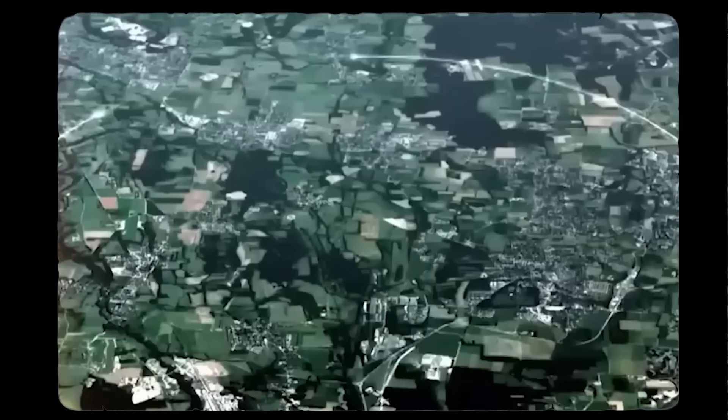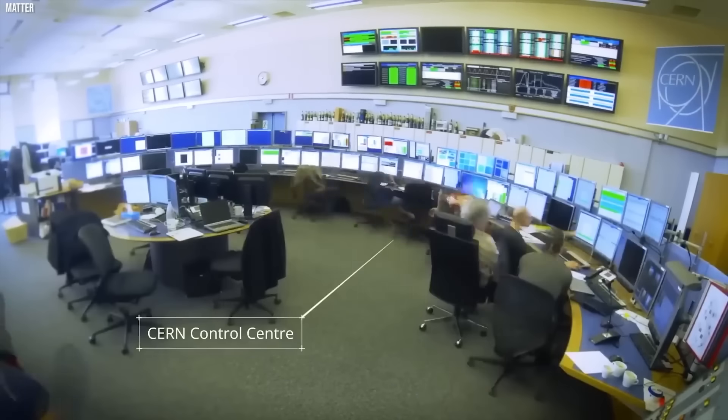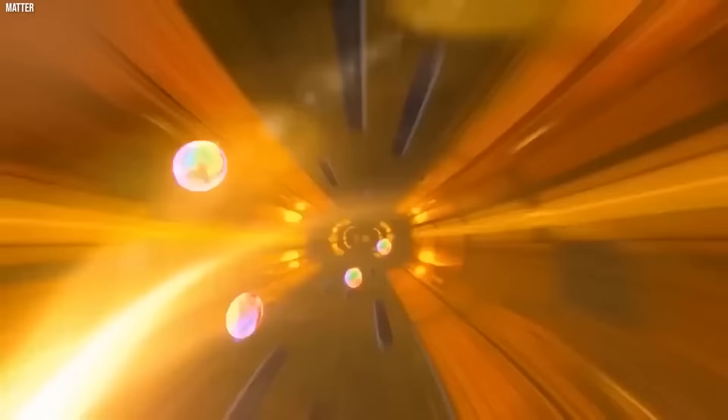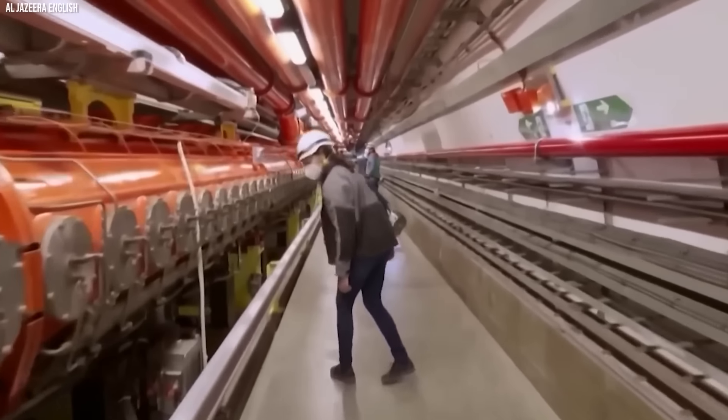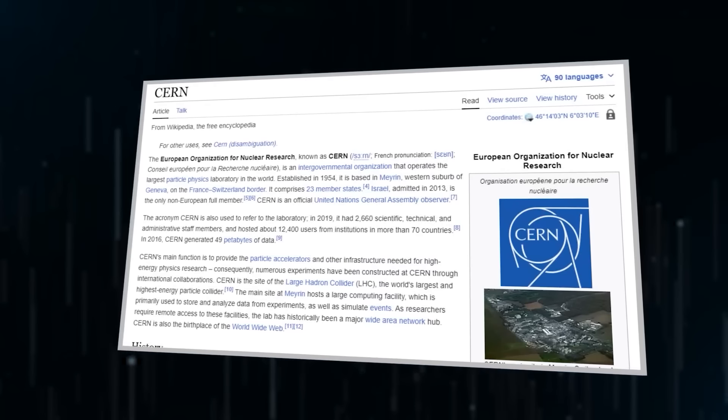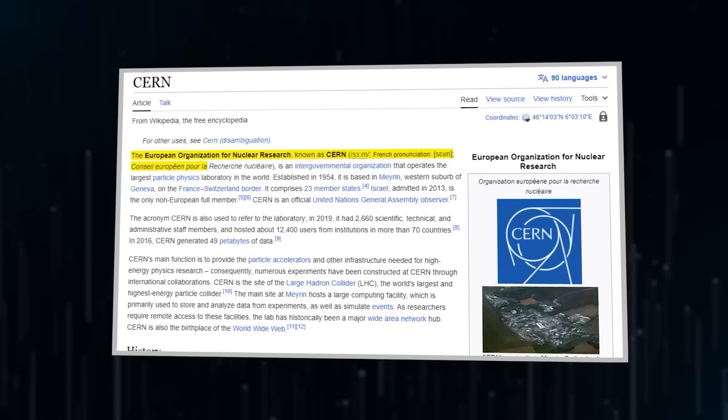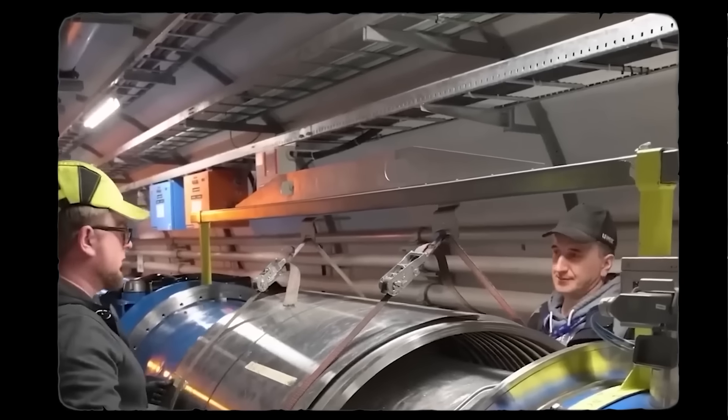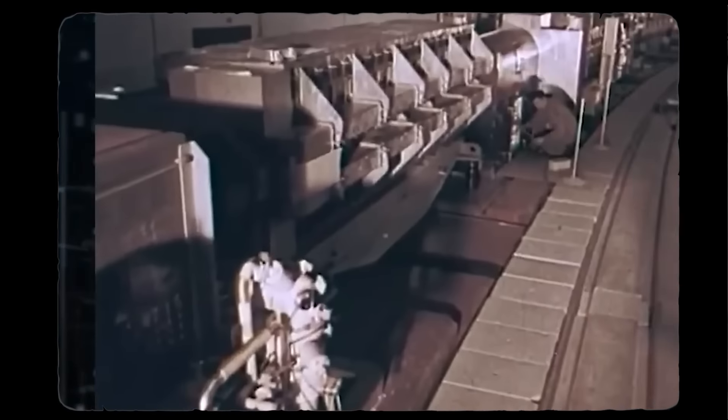CERN, initially established as the European Council for Nuclear Research in 1952, now focuses on fundamental physics research, particularly in the field of particle physics. Particle physics explores the basic building blocks of matter and the fundamental forces that govern them, reflecting a broader understanding of matter beyond just the nucleus. Hence, CERN is commonly referred to as the European Laboratory for Particle Physics. At CERN, scientists utilize the world's largest and most intricate scientific instruments to study the fundamental constituents of matter. Their goal is to push the boundaries of human knowledge by exploring the smallest building blocks of our universe.